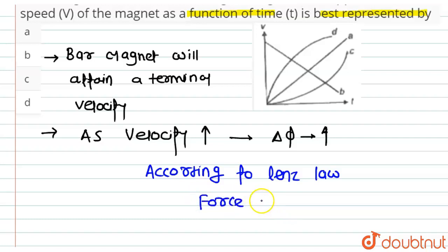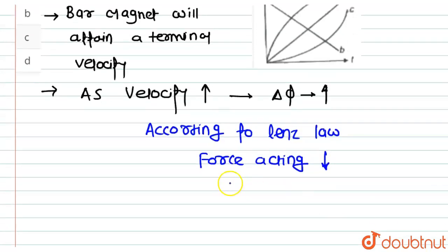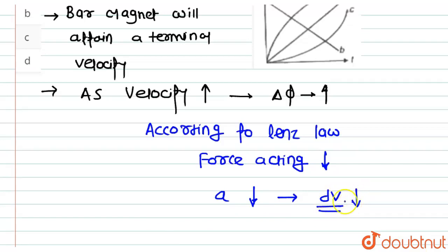The magnetic force acting on it will start decreasing. As the force decreases, the acceleration is also decreasing, and as acceleration decreases, the rate of change of velocity dV also decreases. This means velocity will keep increasing but at a decreasing rate.